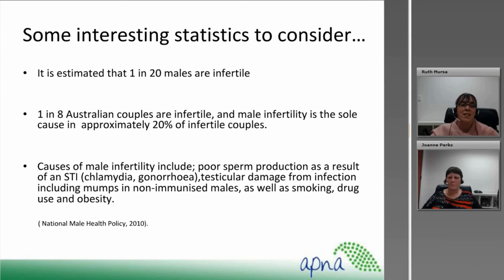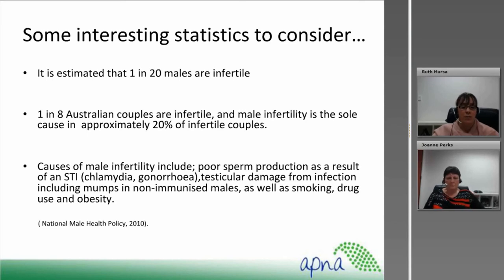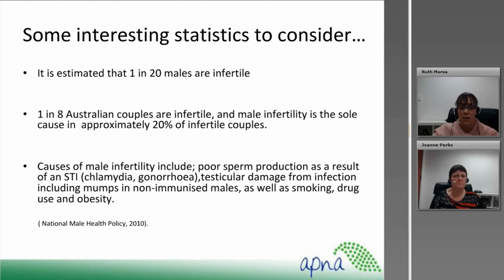Some interesting statistics to consider: it is estimated that about 1 in 20 males are infertile, and 1 in 8 Australian couples are infertile. Male infertility is the sole cause in approximately 20% of infertile couples. Causes of male infertility include impaired sperm production as a result of STIs such as chlamydia and gonorrhoea, testicular damage from infection including mumps in non-immunised males, as well as smoking, drug use and obesity. If a young man who is not immunised against mumps contracts mumps, it could potentially affect his fertility and make him infertile. Being proactive in promoting this as nurses in primary health care is a huge role. Remembering that there are many causes of infertility that may be preventable, manageable and treatable.